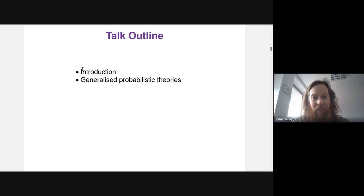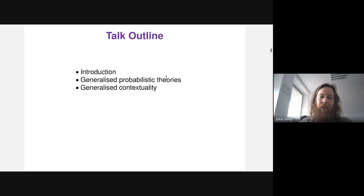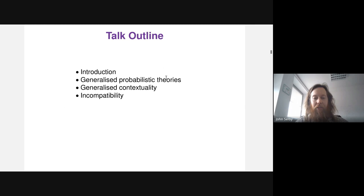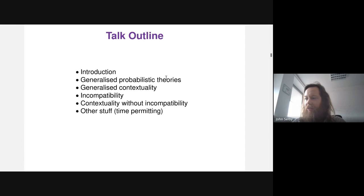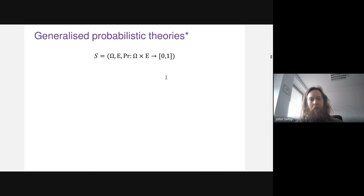The outline of the talk is as follows. After this brief introduction, I'll introduce the main tool — generalized probabilistic theories. I'll briefly define generalized contextuality as the notion of non-classicality I'm interested in, then define incompatibility of measurements, and argue that you can have contextuality without incompatibility. I've tried to make this accessible and introduce all the relevant mathematical details, but feel free to interrupt with questions as the talk goes on.